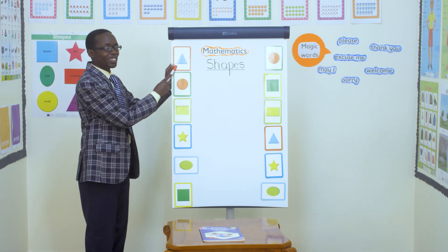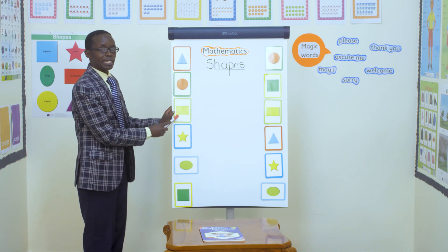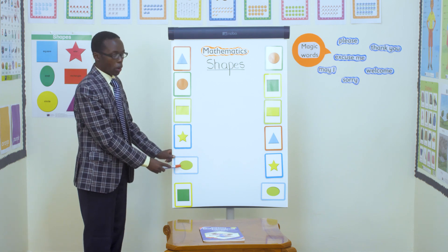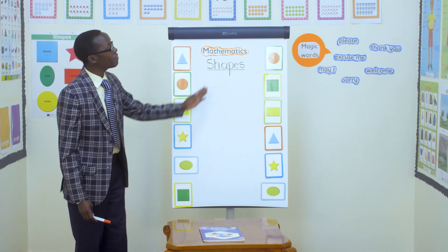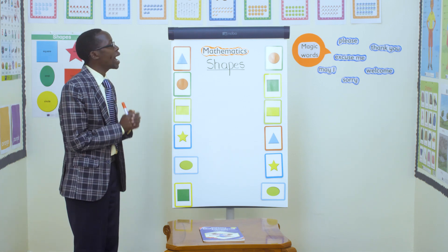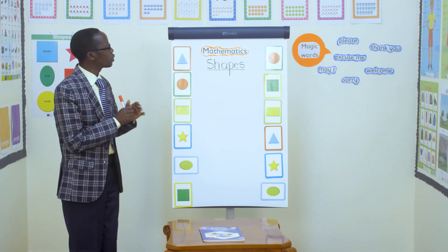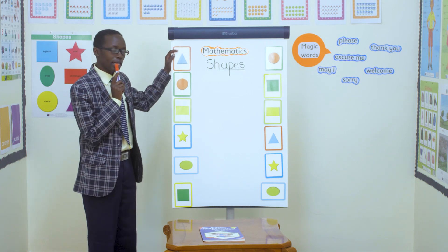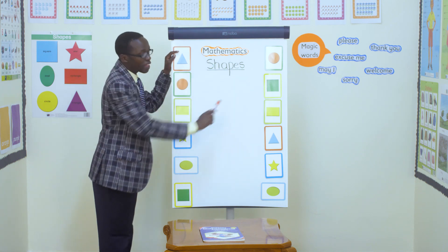Square. Now let's read all of them. Triangle. Circle. Rectangle. Star. Oval. Square. Very good. And we have other shapes here. And now we said we want to match and pair. We want to look at this side — we have one shape.